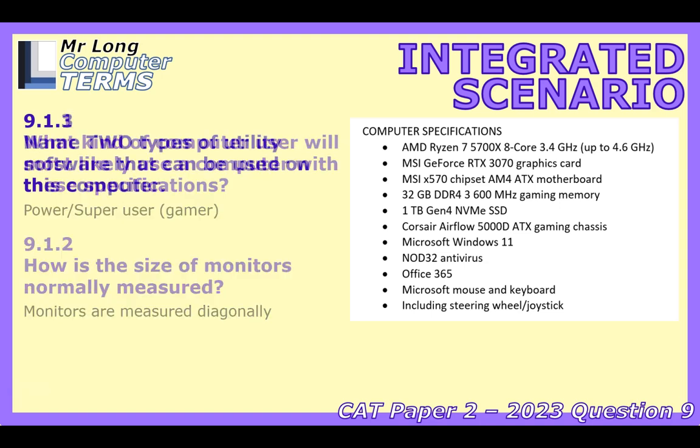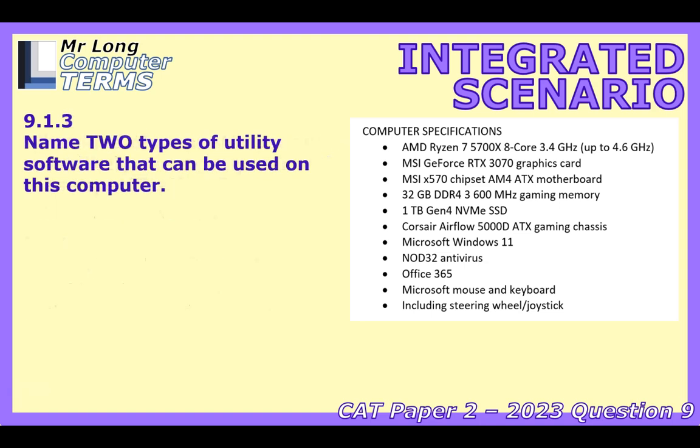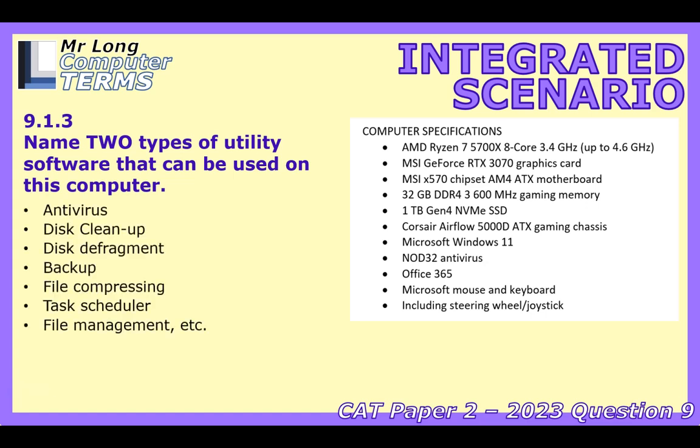Moving to software. Question 9.1.3 asks for two types of utility software. Examples given include antivirus, disk cleanup, defragmenter, backup tools, file compression, task scheduler, and file management. Utility software helps manage and maintain the computer — it's like a toolkit for the operating system, the behind-the-scenes crew keeping things optimized, secure, and running smoothly.